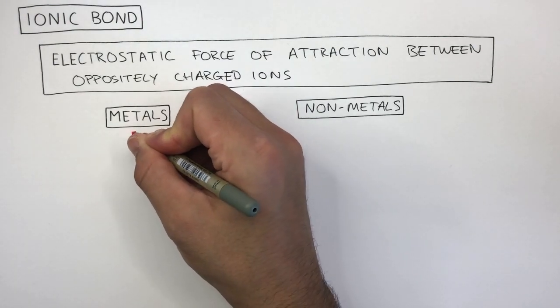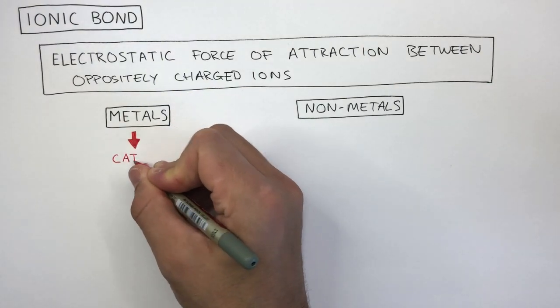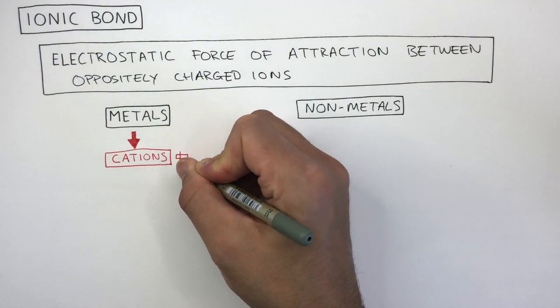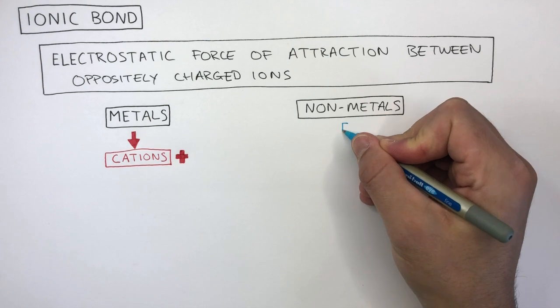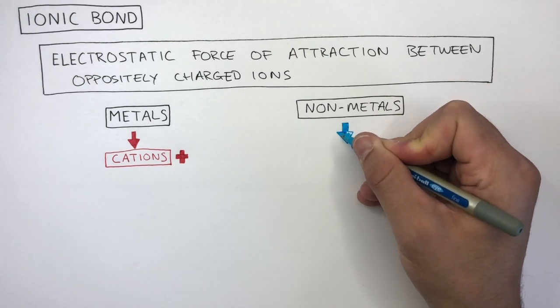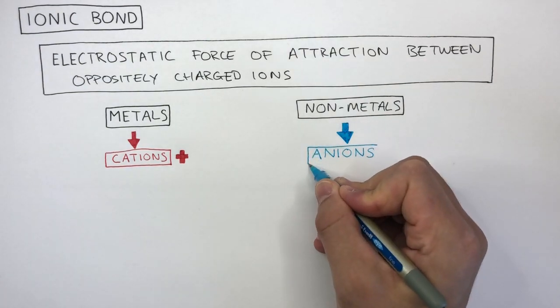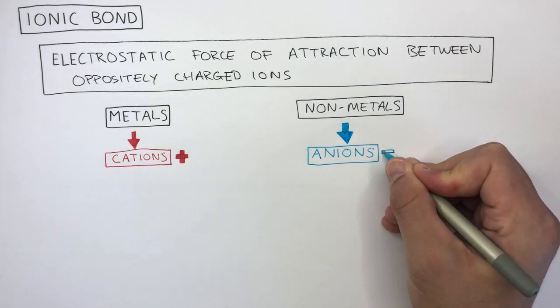Metal atoms always lose electrons to become cations. Cations are positively charged ions, whereas non-metals always gain electrons to become anions. Anions are negatively charged ions.